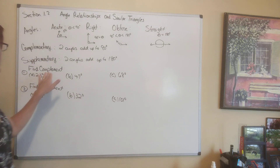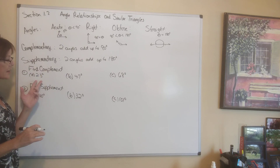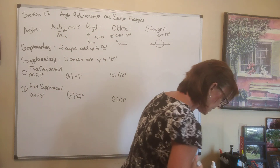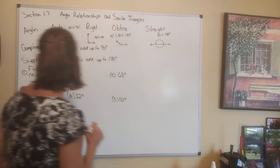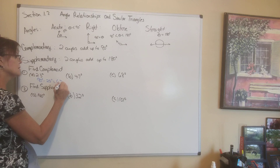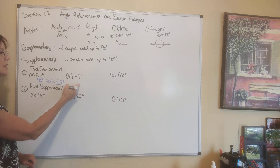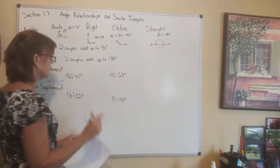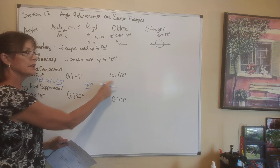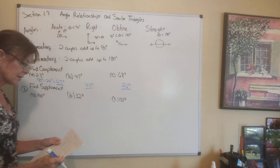So real quick, let's find the complement of 23 degrees. What we would do is subtract 23 from 90, so we get 90 minus 23, which gives us 67 degrees. That's the complement of 23 degrees. For B, we would say 90 minus 47, and its complement would be 43 degrees. And 90 minus 68 gives a complement of 22 degrees.